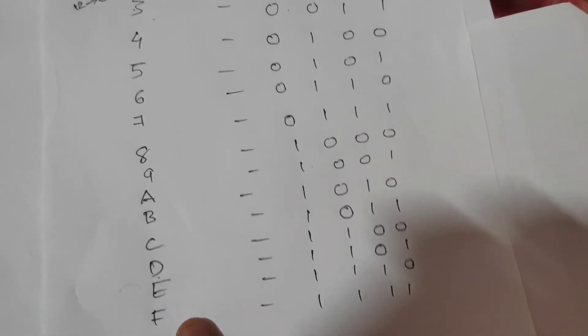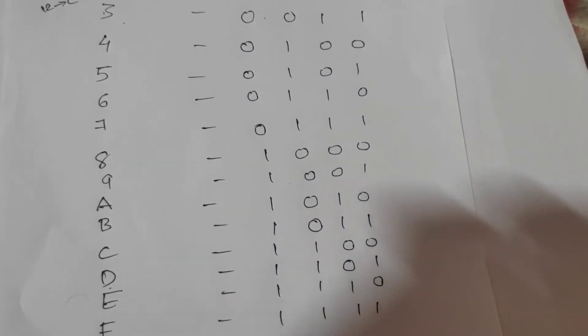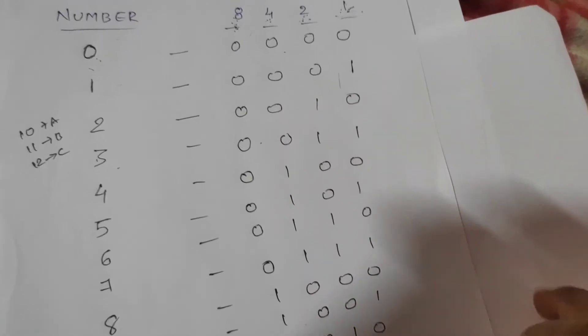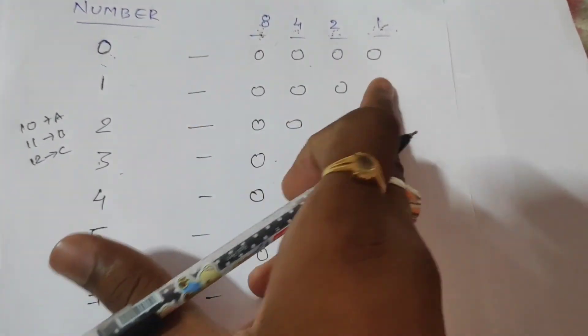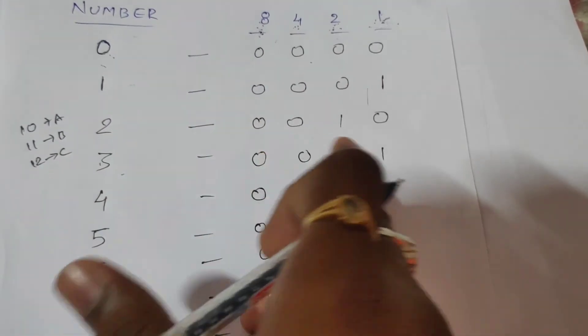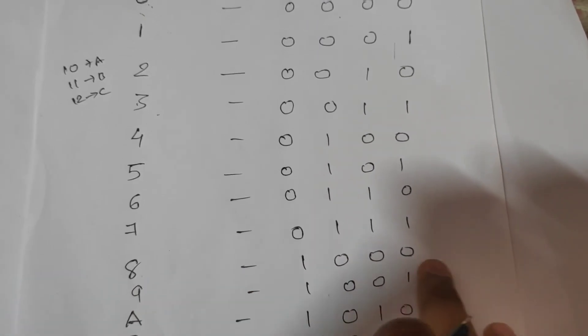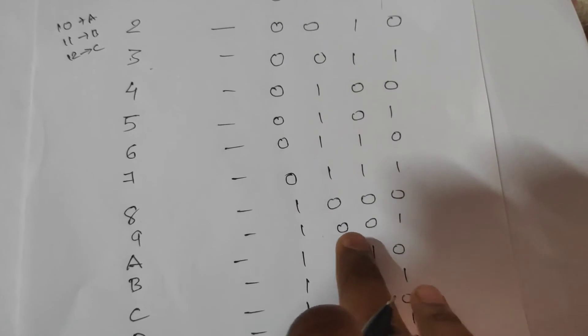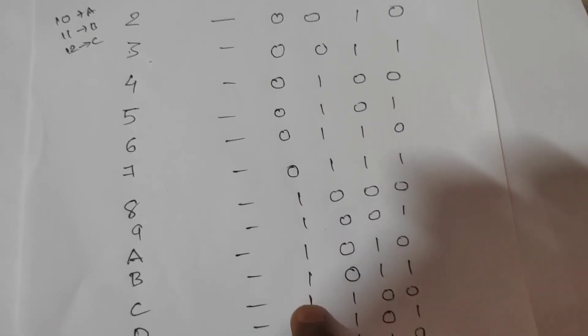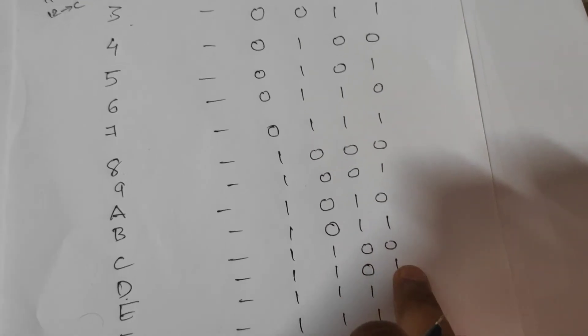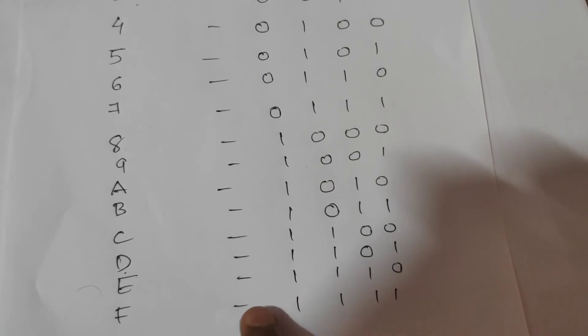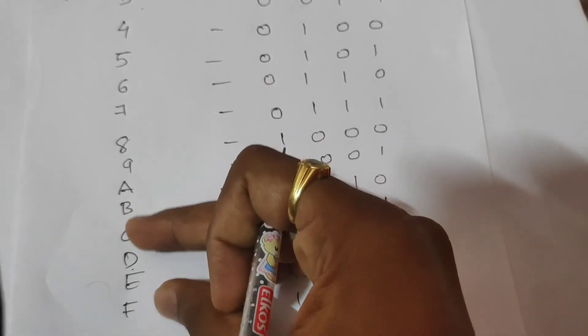So the binary representations are: 0 is 0000, 1 is 0001, 2 is 0010, 3 is 0011, 4 is 0100, 5 is 0101, 6 is 0110, 7 is 0111, 8 is 1000, 9 is 1001. Then A is 1010, B is 1011, C is 1100, D is 1101, E is 1110, F is 1111. So A through F represent decimal values 10 through 15.